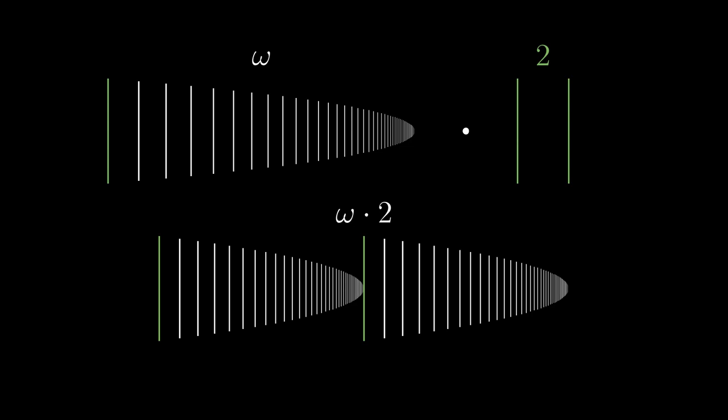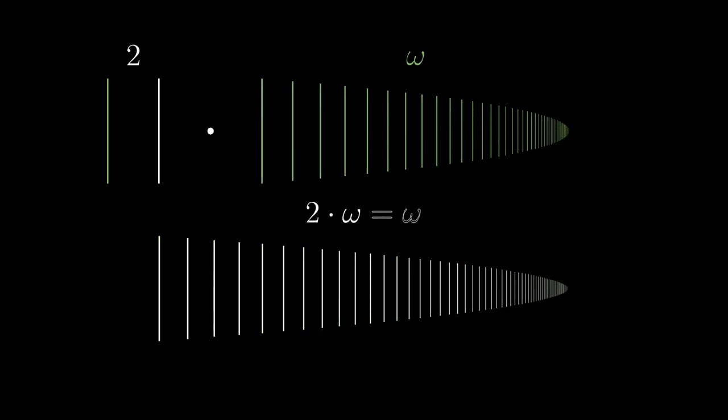And again, order matters. It was important to write the product in the order omega times 2. If we multiply 2 times omega, we replace every point of the second factor, that is omega, by 2. As in the case of addition, the result is just omega.